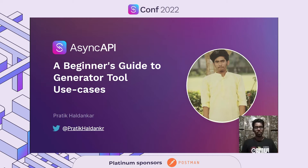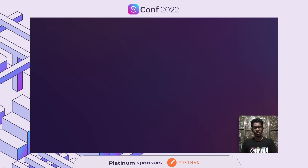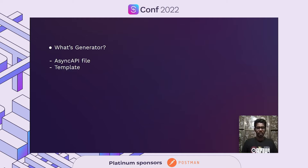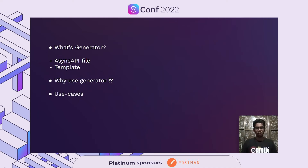Before we move forward, here are the things we are going to cover in today's talk. First, what is Generator — I will be covering what Generator is and what it can be used for. Then, we will discuss the two essential components of the Generator library and their purpose. After that, we will discuss why we need Generator in our applications or projects, followed by some use cases of the Generator tool. Finally, I will give a demo on how to use Generator firsthand to generate documentation for our application.